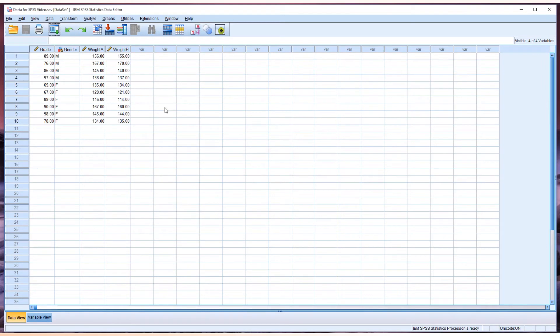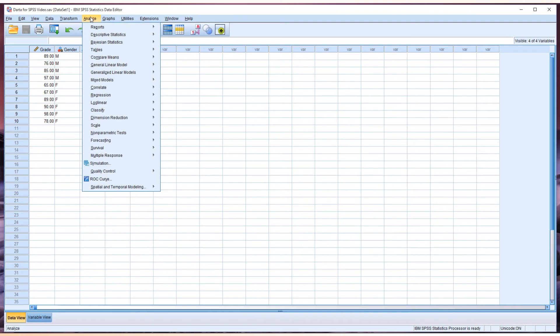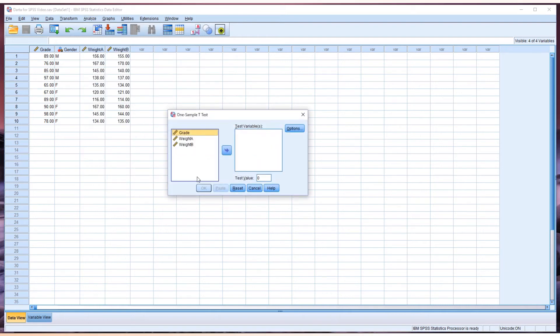Let's test if the average of test score is lower than 90 or not. Go from analyze, compare means, one sample t-test. We are testing about the average mark, so grade, using grade. And we are finding if the average is lower than 90 or not. So test value should be 90.